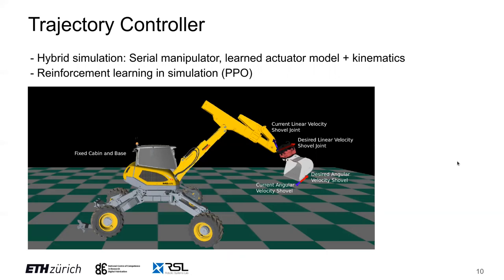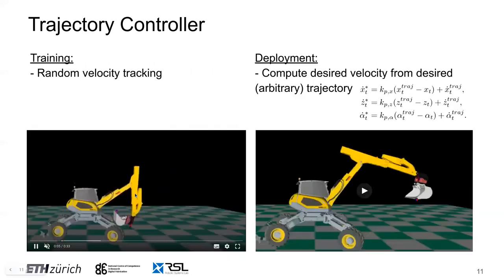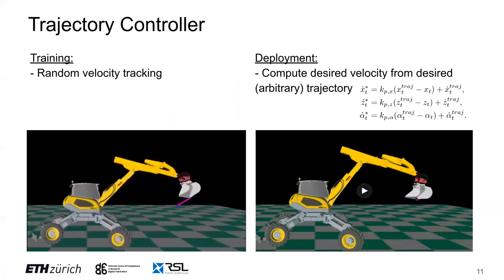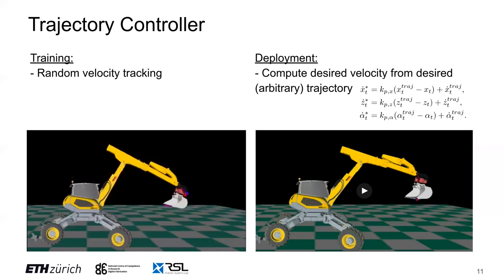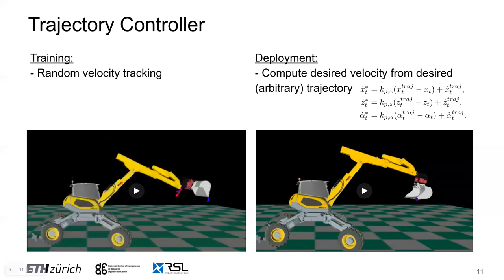For doing reinforcement learning, we use an off-the-shelf algorithm, PPO. What you see in the left video is the training scenario where we initialize the agent in random configurations and train it to track randomly sampled end-effector velocities. We use relatively short episode lengths of only two seconds, which is a trade-off between giving the agent enough time to achieve the goal and not accumulating too much drift from rolling forward the actuator model. This takes around two hours on a regular desktop PC.